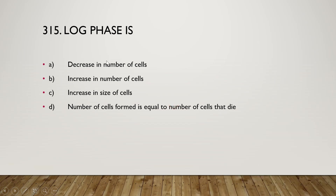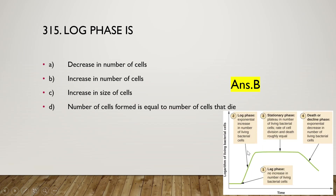The next question: the log phase is characterized by decrease in number of cells, increase in number of cells, increase in size of cells, or number of cells formed equals number of cells that die. The right answer is option B — increase in number of living cells (exponential growth).